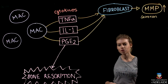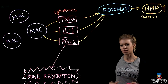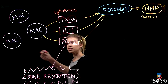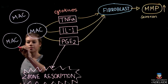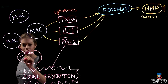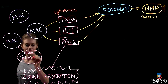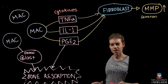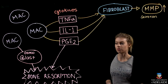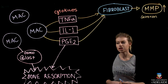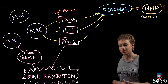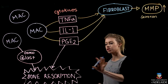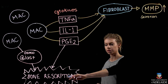Bone resorption occurs by PGE2 stimulating macrophages in bone to turn into osteoclasts. PGE2 also stimulates osteoblasts to secrete RANKL, which directly relates to bone resorption as well.